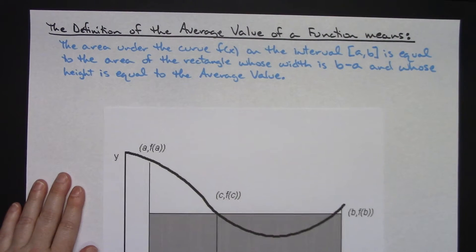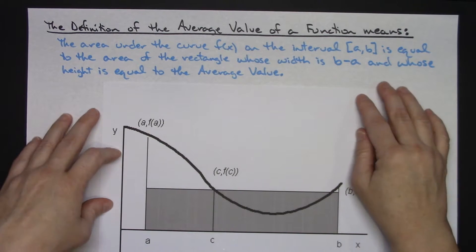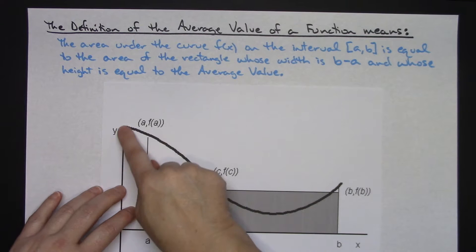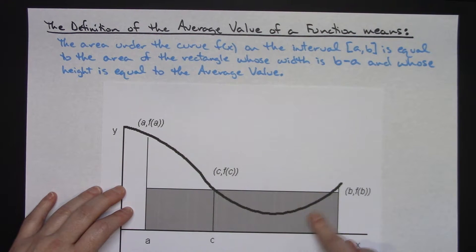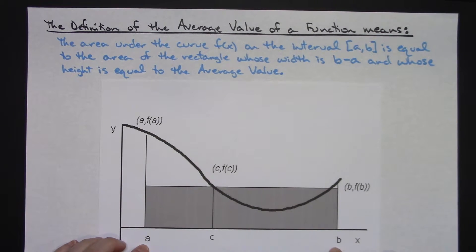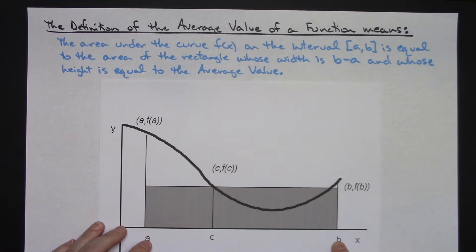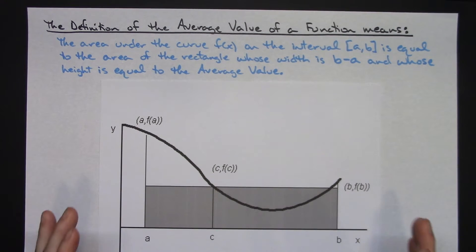What we've got here is the definition of the average value of the function. What that definition really means is the area under the curve of f(x). So the area underneath the curve on the interval from a to b is going to be equal to the area of a rectangle whose width is b minus a and whose height is equal to the average value. Here's my point c in the interval — there's the average value — and that's the width of the rectangle. So this area underneath the curve from a to b is equal to the area of this rectangle. That's a visual understanding of what the average value of a function means.